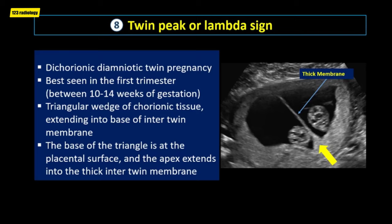The twin peak sign indicates the presence of a dichorionic-diamniotic twin pregnancy. It is best seen in the first trimester, between 10 to 14 weeks of gestation. It is a triangular wedge of chorionic tissue extending into the base of the inter-twin membrane. The base of the echogenic triangle is at the placental surface, and the apex extends into the thick inter-twin membrane.